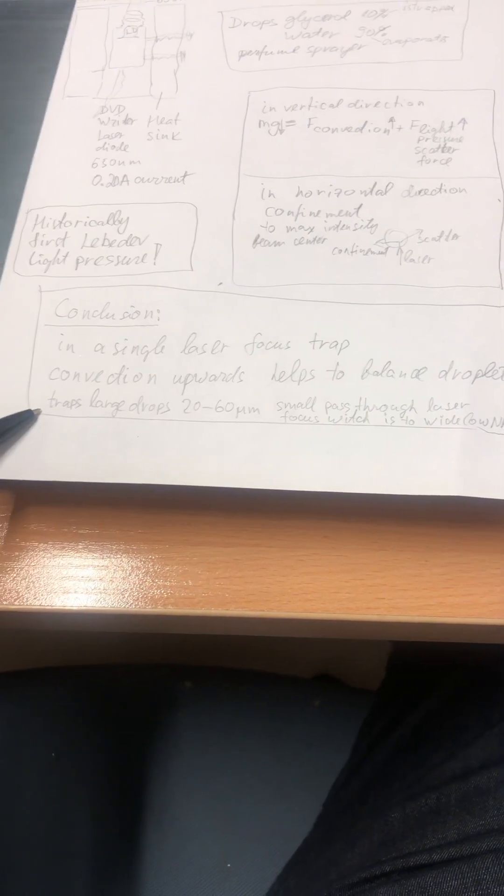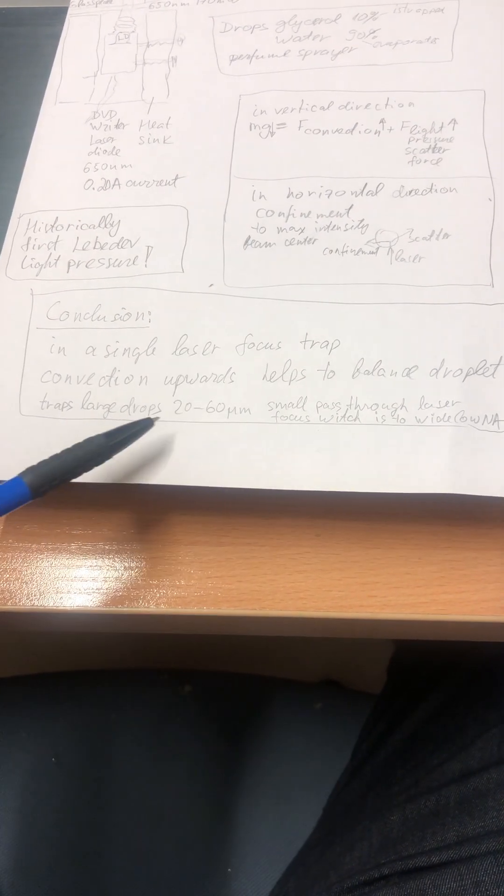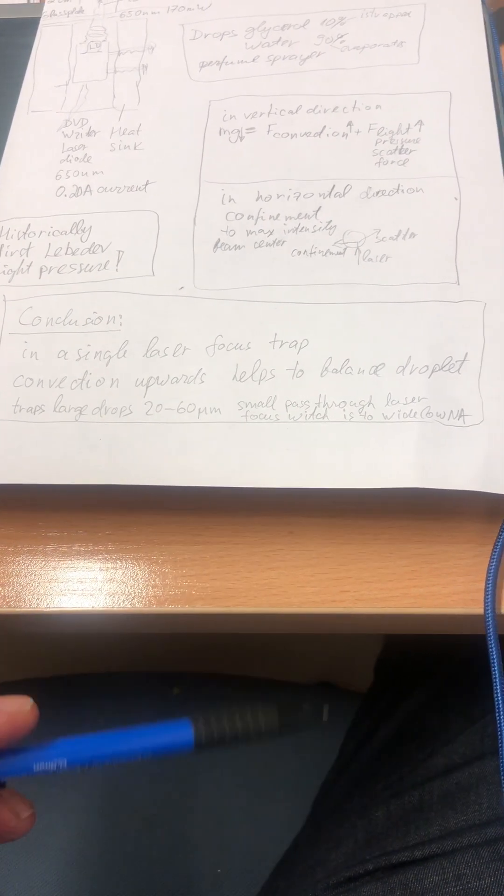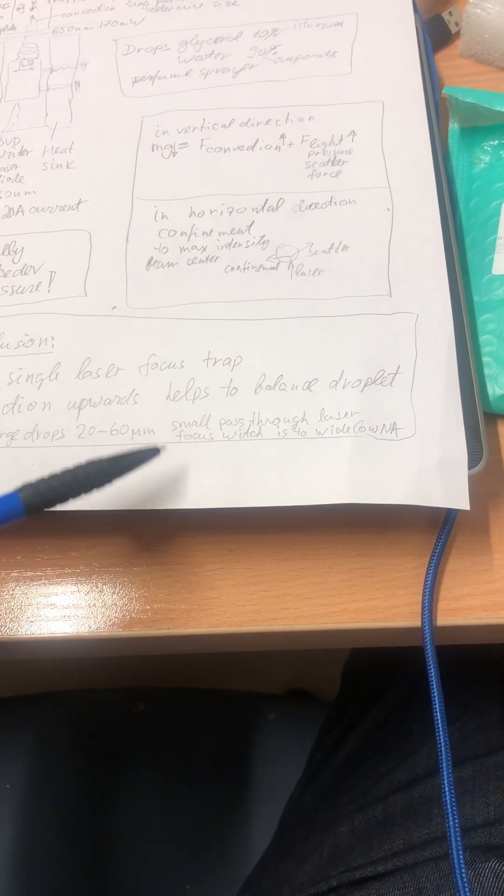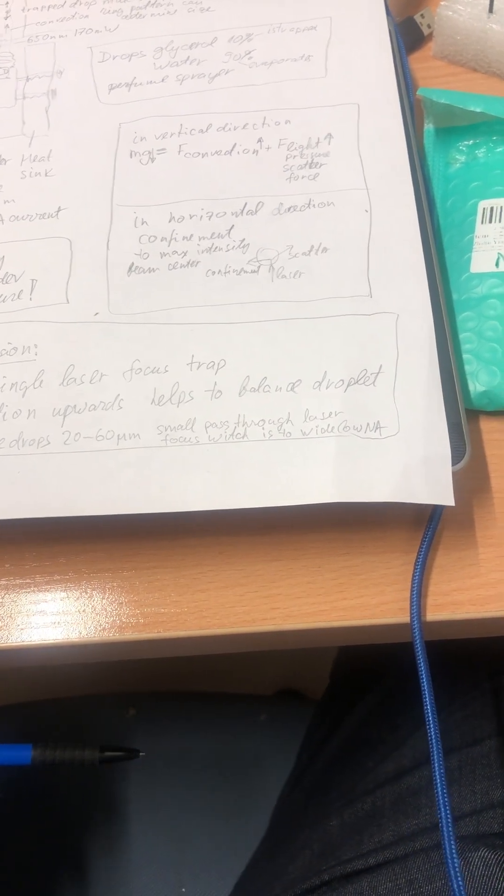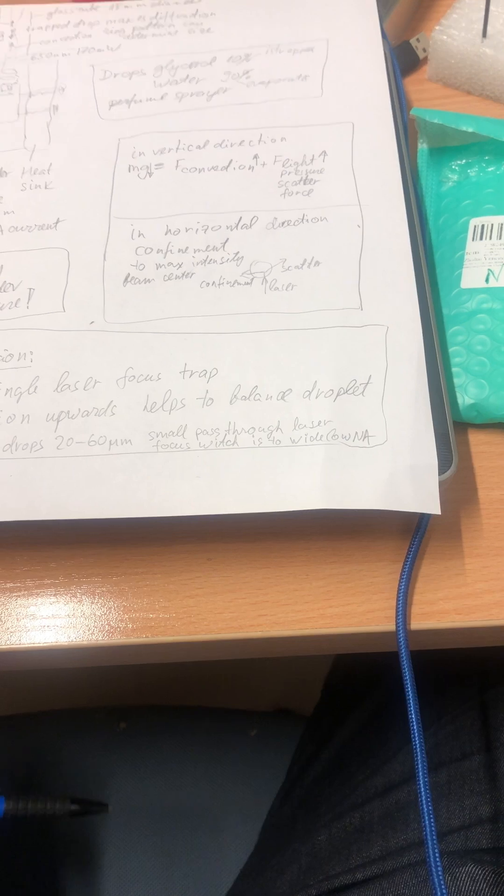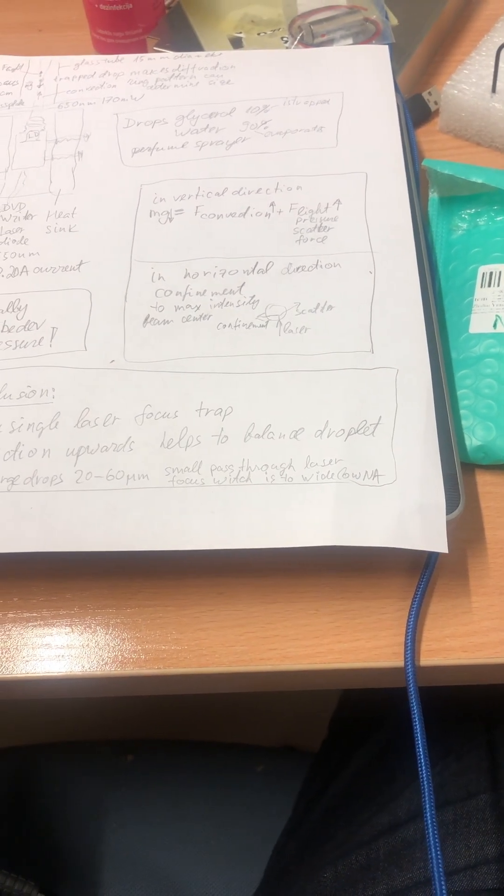The trap is good for large drops, 20 to 60 micrometers diameter. Small drops pass through the laser beam which is too broad for them, and they just see a plane wave.